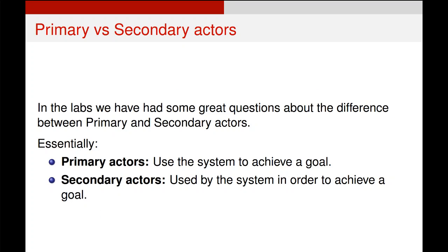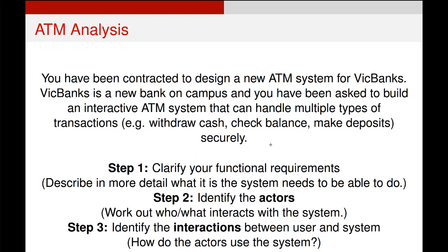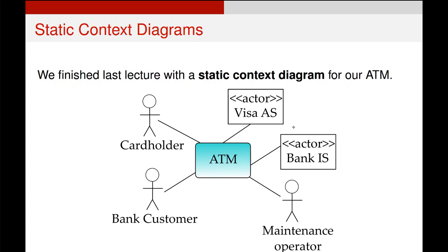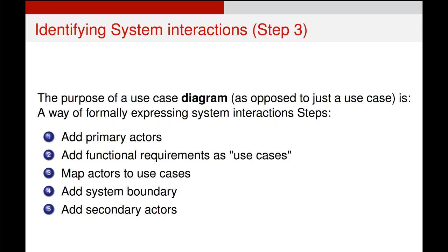One thing I haven't talked about so far is the difference between primary and secondary actors. The cardholder, the bank customer, and potentially even the maintenance operator are all primary users of the system — they use the system to achieve some end. Whereas the Visa authentication system and the bank authentication system are secondary actors; they are actors used by the system to achieve some end. A small but important difference.